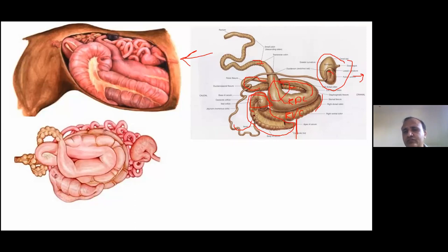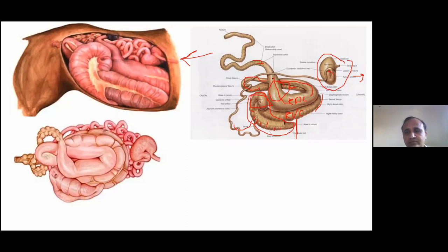From the pelvic flexure, the left dorsal colon travels cranially toward the diaphragm, forms the diaphragmatic flexure, becomes the right dorsal colon, then the transverse colon traveling left, followed by the small colon and then the rectum. An important anatomical distinction: the cecum, right ventral colon, and left ventral colon have sacculations, while the left dorsal colon, right dorsal colon, and transverse colon do not. The ventral part of the colon has sacculations; the dorsal part does not — this helps during surgical manipulation.